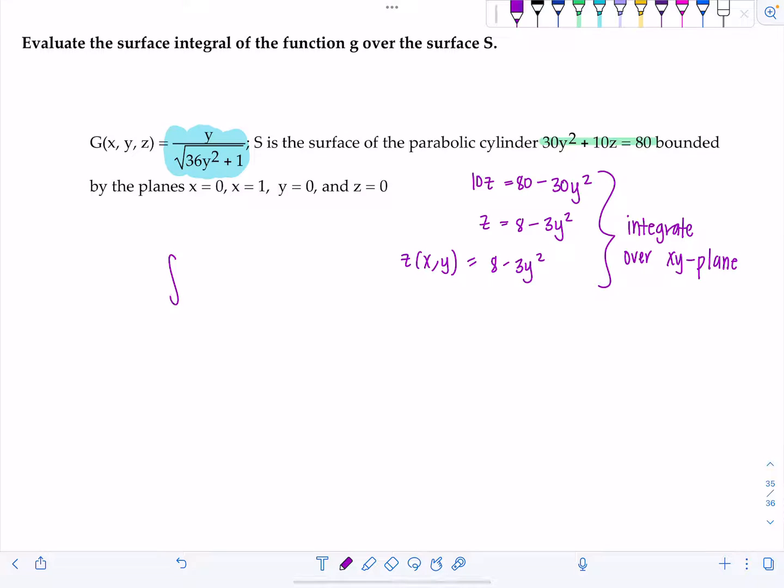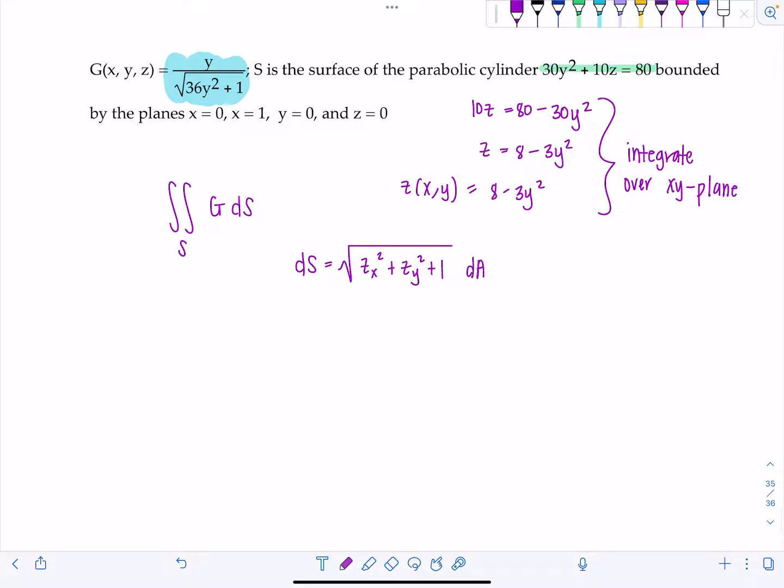And so when you set up your surface integral, you always have double integral over the surface S. We're going to be integrating our function g. And then we have dS. And in this particular case, if we're integrating over the xy plane, then dS is going to equal square root of partial with respect to x squared plus partial with respect to y squared plus 1 dA. We can take care of those partials if we want now. And then we are going to have to graph so we can determine exactly the limits of integration for our integration region.